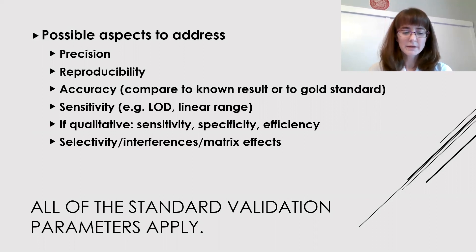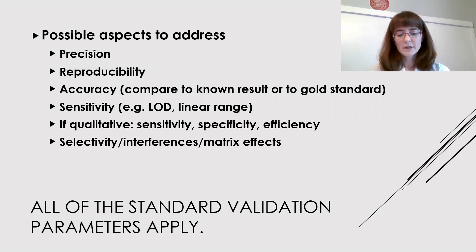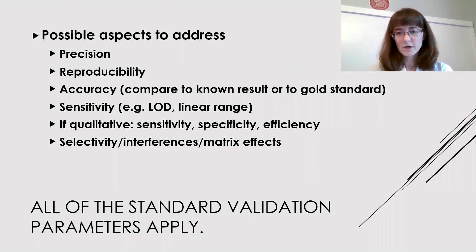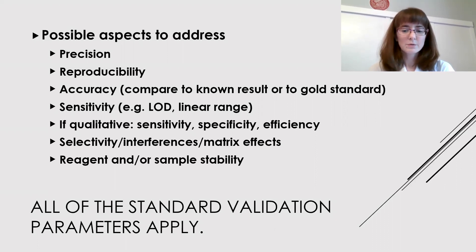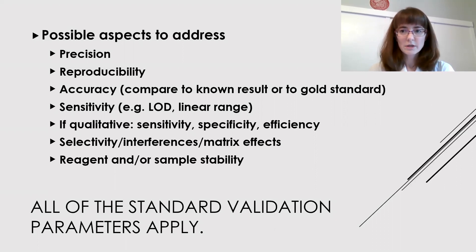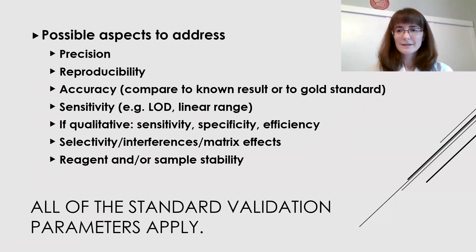Something that can become especially problematic for immunoassays is thinking about selectivity and matrix effects. Because of the complexity of the biological matrices that we're often working with, like cell culture media, these can play a big role. The other component that you really have to think about when working with these biological reagents is their stability. We especially want to make sure that we're storing them properly — for example, antibodies should be stored at four degrees usually, although if they aren't labeled they can often be frozen and will last for years.